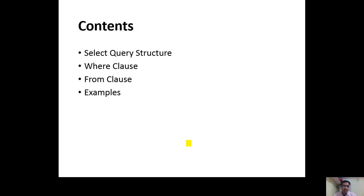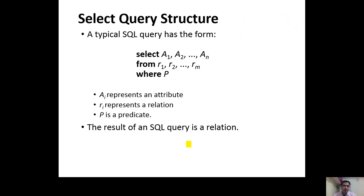The contents include the SELECT query structure, the WHERE clause, and the FROM clause, with some examples. The typical SQL query has the form SELECT FROM WHERE. In the SELECT keyword, we specify attribute names A1 to AN; in the FROM clause, relation names R1 to RM; and in the WHERE clause, a predicate condition. The result of this SQL query returns a relation.